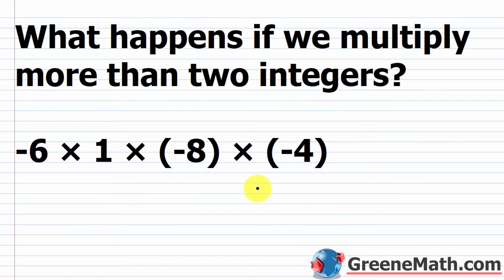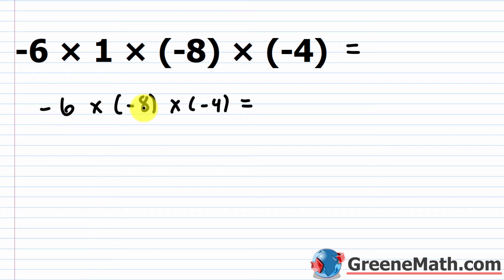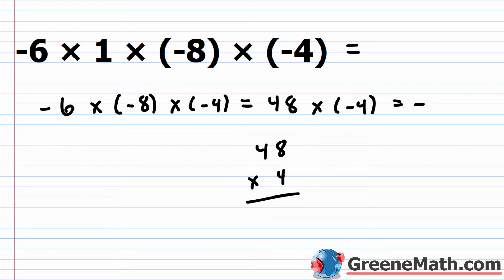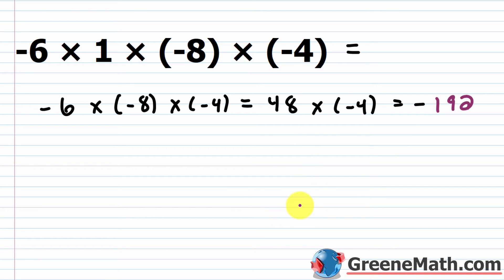Now let's talk about multiplying more than two integers — it's just as easy. Working left to right: negative six times one is negative six, then negative six times negative eight is positive 48 (negative times negative is positive, six times eight is 48), then positive 48 times negative four gives negative 192 (positive times negative is negative, 48 times four is 192). An easier way is to count the total number of negative factors: if it's even, the product is positive; if it's odd, the product is negative.